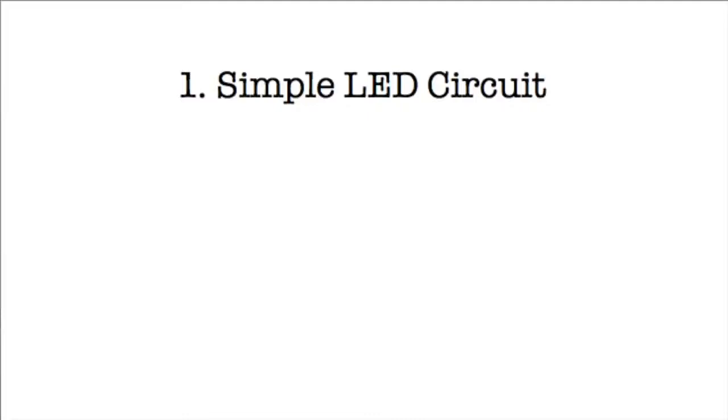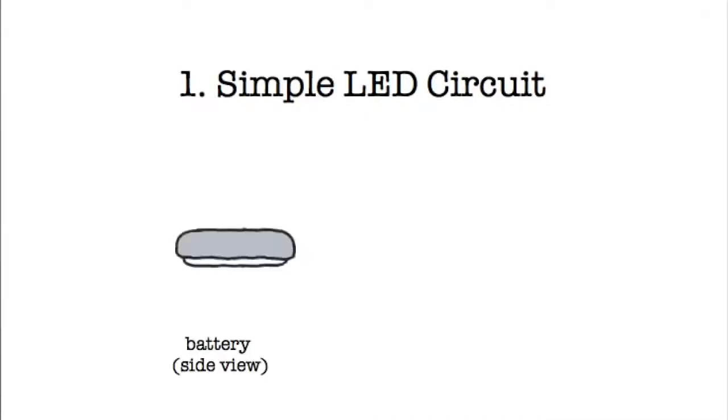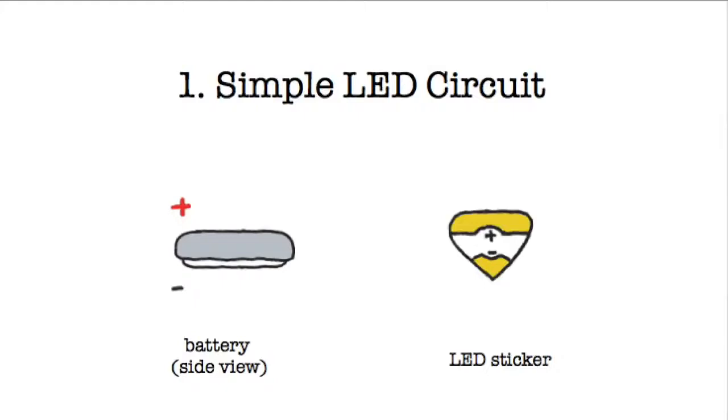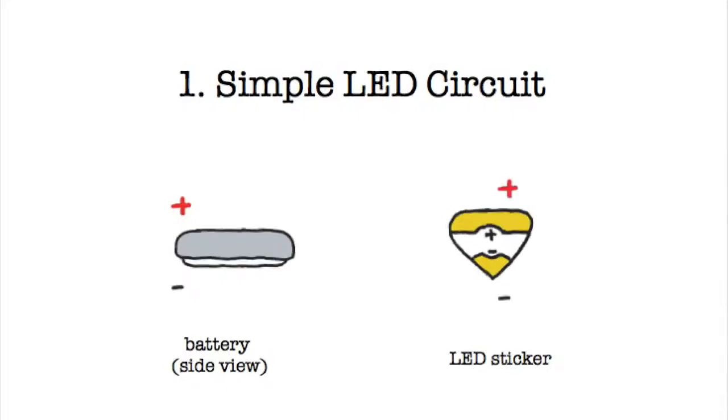There are three main parts to a circuit. First is the battery. In our case, we'll be using a coin cell battery, which has a plus side and a minus side. The plus side is marked on the top with a plus. Then you have your LED sticker, which also has a plus side, the wide end, and a minus side, the pointy end.